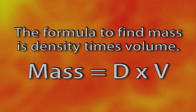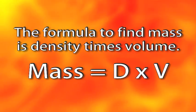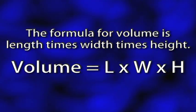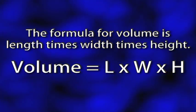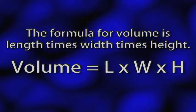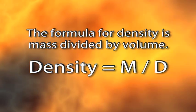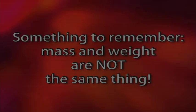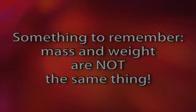The formula to find mass is density times volume. The formula for volume is length times width times height. The formula for density is mass divided by volume. And something to remember: mass and weight are not the same thing.